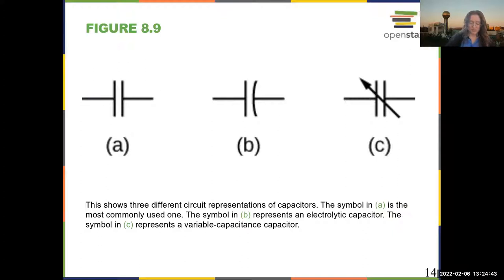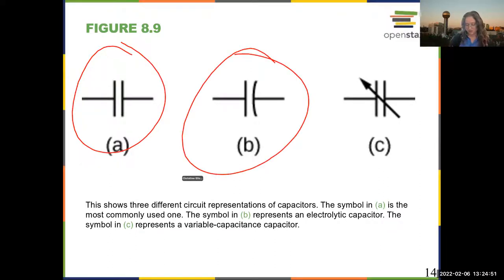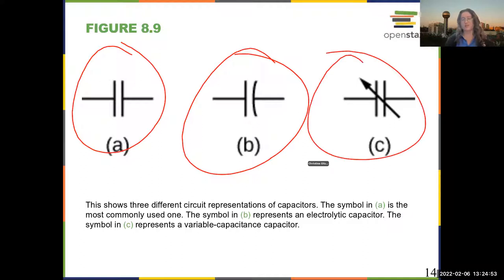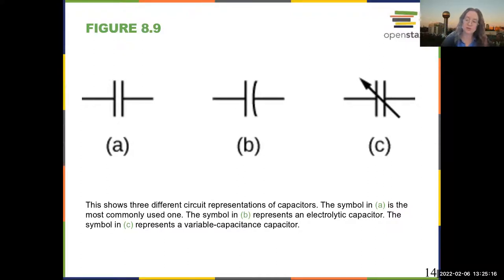There are different symbols for capacitors: a parallel plate capacitor, an electrolytic capacitor, and a variable capacitor. Variable capacitors are great — like the one with a turning plate that can change the capacitance. You'll find out later that things like radios that pick up frequencies use a variable capacitor to tune the frequency, changing the natural frequency of the circuit.